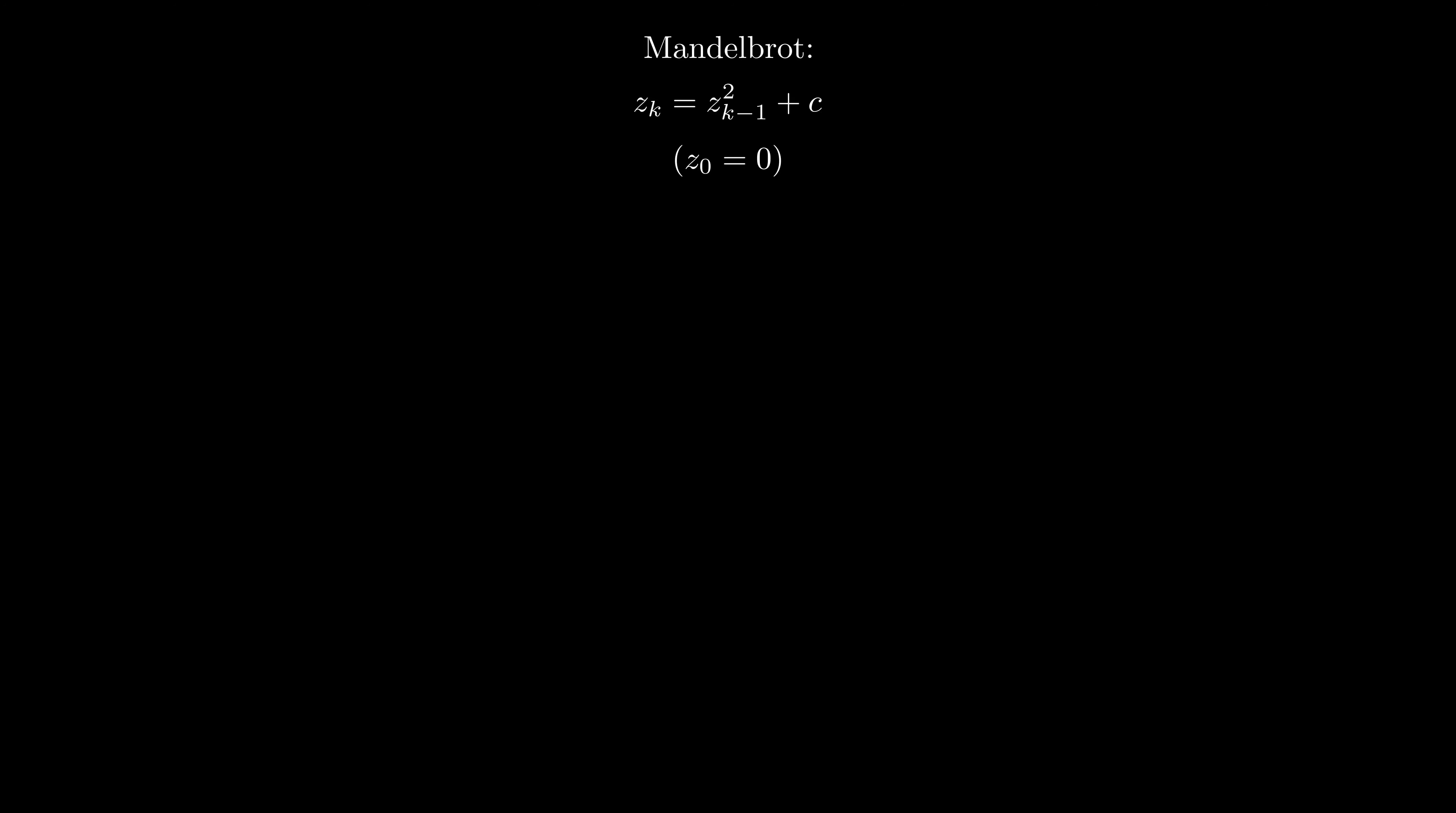In that video, we modified the Mandelbrot equation by raising the constant C to a changing power. We changed this power slowly from 1 to minus 1, while looking at the resulting transformed Mandelbrot set. The question the viewer asked is what would have happened if we would have changed that power in the other direction.